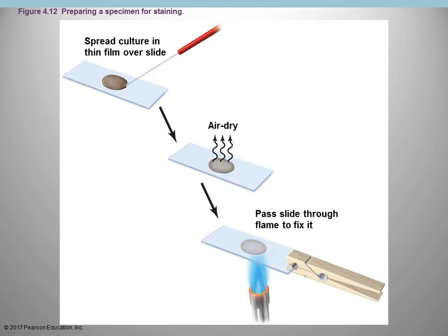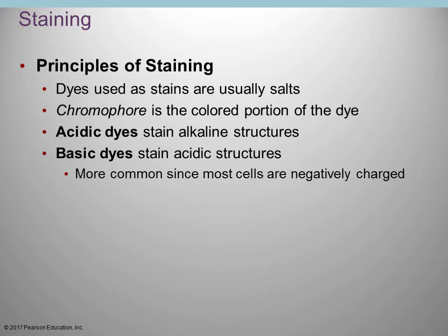The reason for heat fixing: number one, it kills the sample so living bacteria aren't on the slide you're working with. It also helps adhere or stick the specimen to the slide. Additionally, most organisms have cell walls — bacteria have a fairly significant cell wall — and heat fixing makes it more permeable to the dye, allowing the dye to penetrate so you can actually see the organisms.